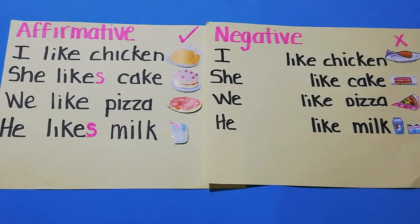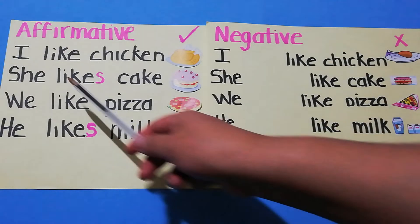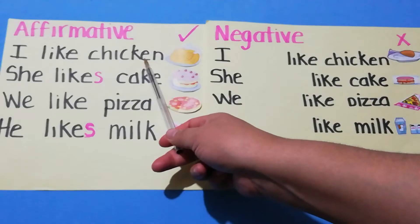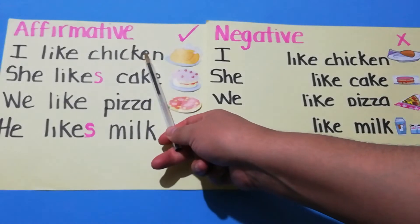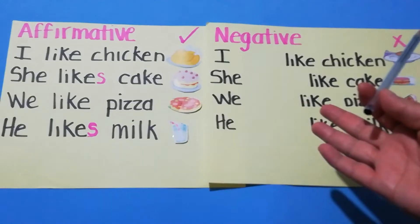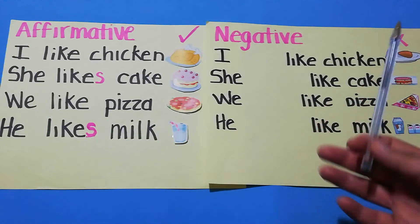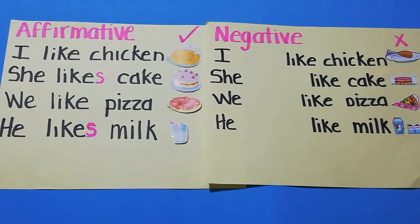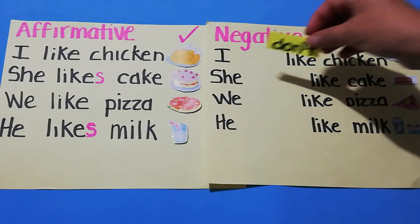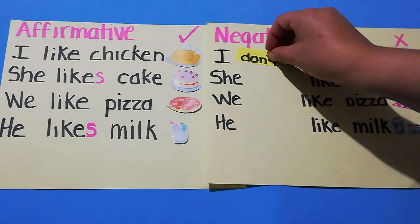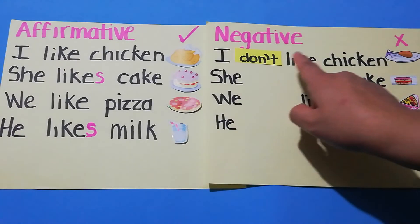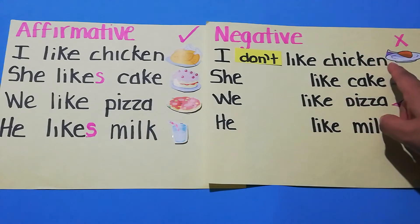Look at the sentence in affirmative form: I like chicken. But what is the negative form of the sentence? You put don't before the verb: I don't like chicken.